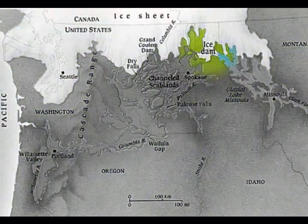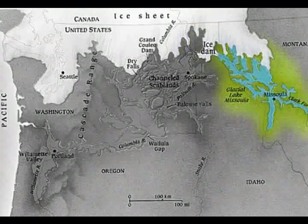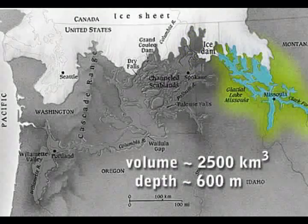About 15,000 years ago, a lobe of the retreating Cordilleran ice sheet blocked meltwater, thus creating Glacial Lake Missoula.